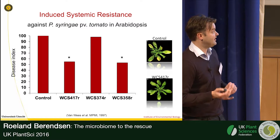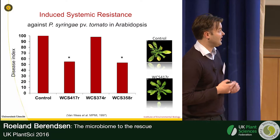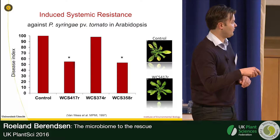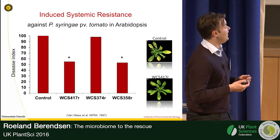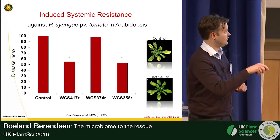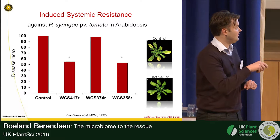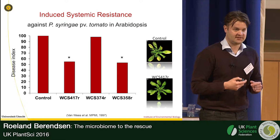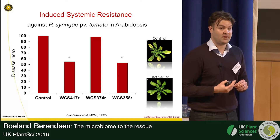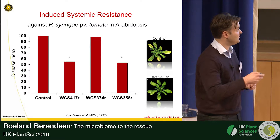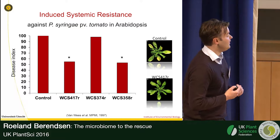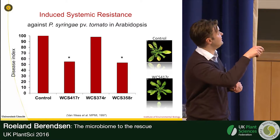In Utrecht we mainly use Pseudomonas bacteria, but it's also been shown that Bacilli and some fungi can induce resistance. Here's an example where plants were colonized by three beneficial Pseudomonas strains — our pet strains — which can all induce resistance. However, ISR is a very plant-specific phenomenon, so on Arabidopsis only two of these Pseudomonas bacteria can induce resistance.